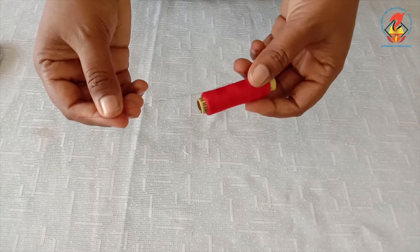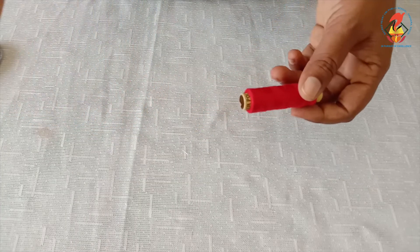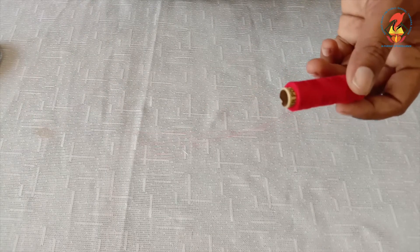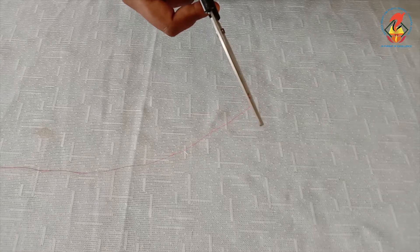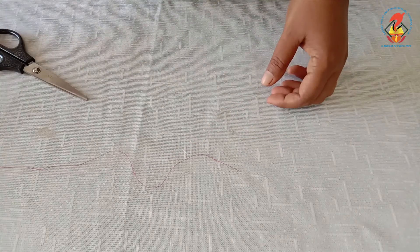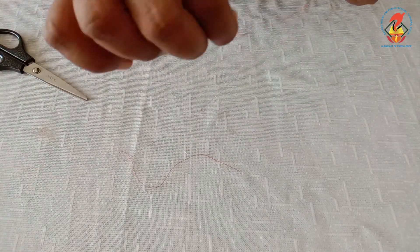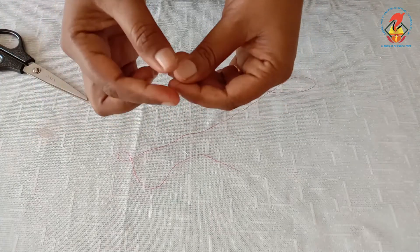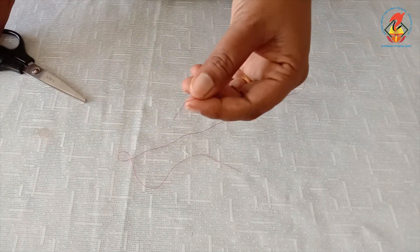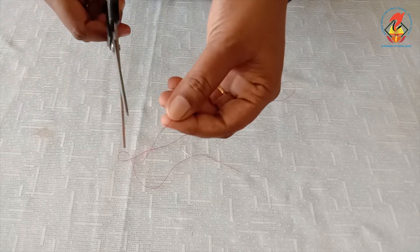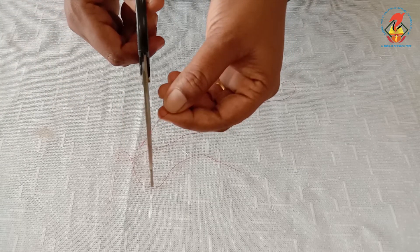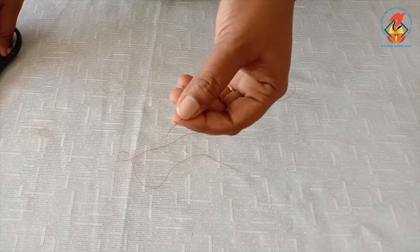Children, take required length of thread. Sometimes certain thread will not go through the tiny eye. So, let us trim the end of thread using the scissors.